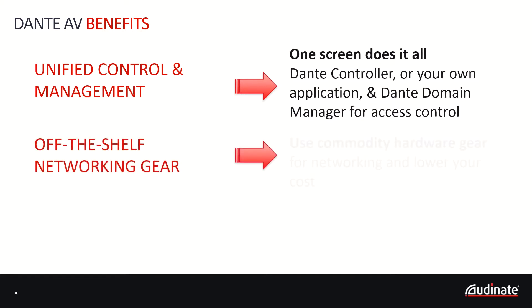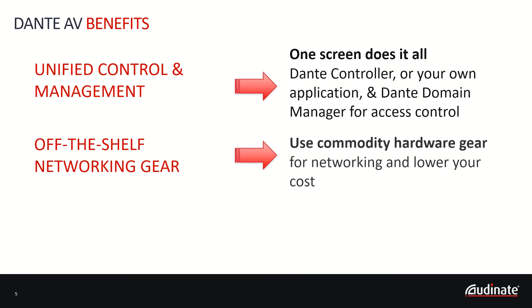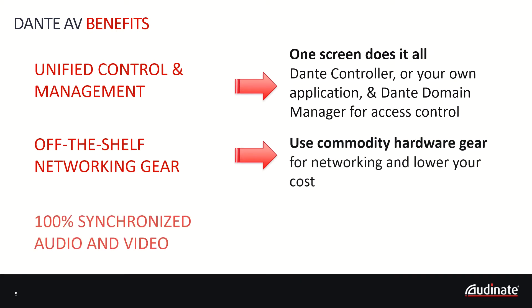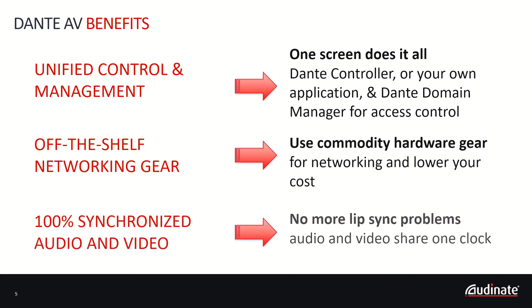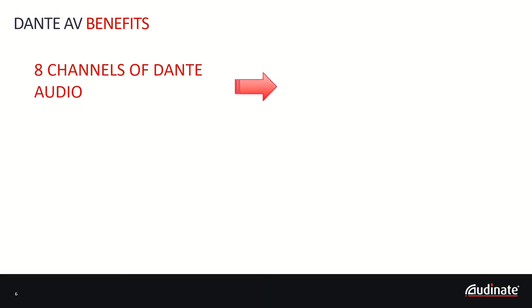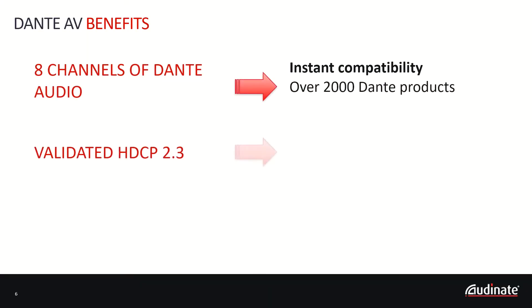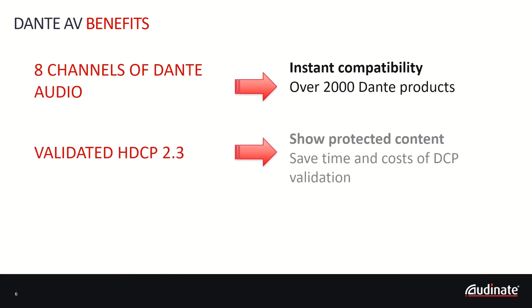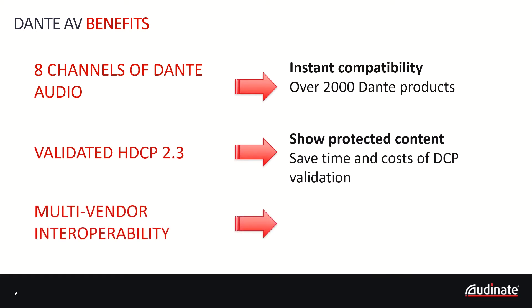Dante domain manager also manages encrypted content with multicast groups and key exchange to ensure glitchless encrypted content. The solution also uses commodity off-the-shelf network switches rather than costly matrix switchers. Dante AV ensures that audio and video are displayed in perfect sync. Dante AV offers up to eight channels of audio and implements HDCP 2.3. Dante AV handles the distribution and management of the encrypted signals and hands that information back to the local board for content protection for the entire path. The solution is interoperable with multiple vendors offering a full ecosystem.